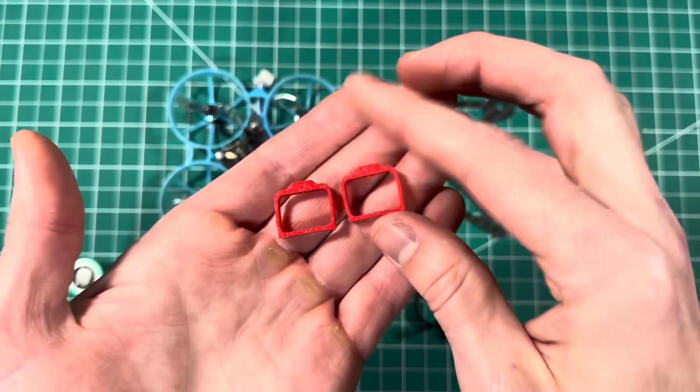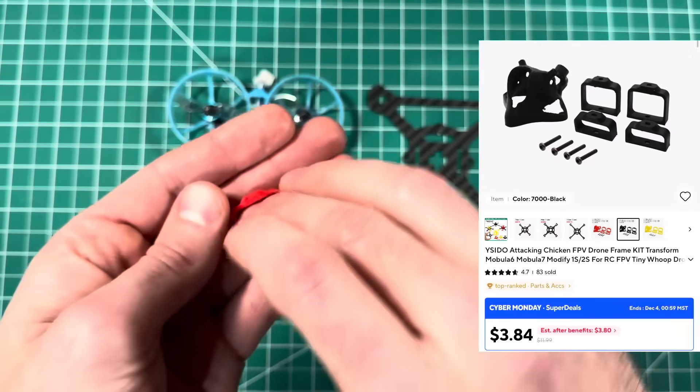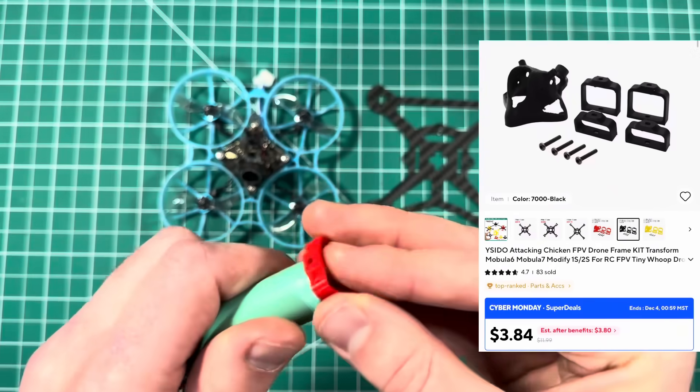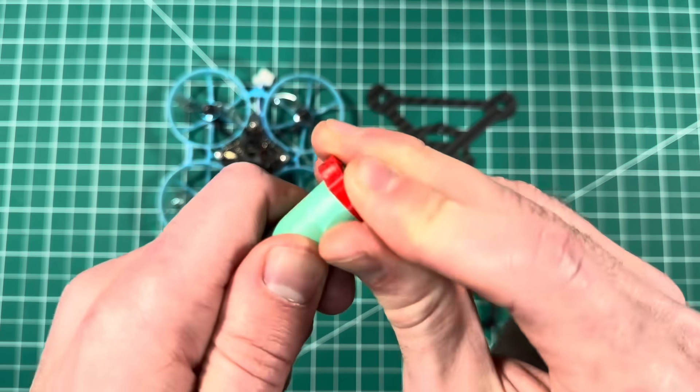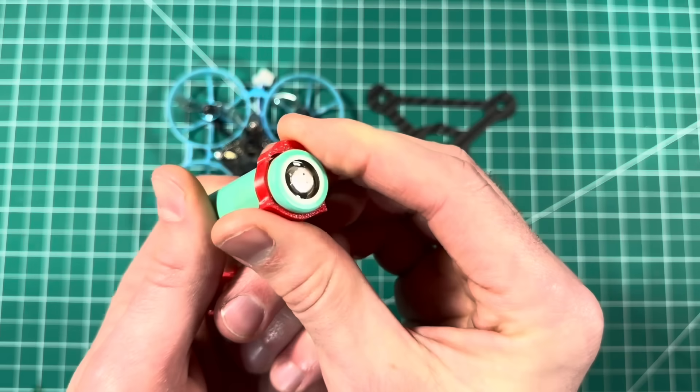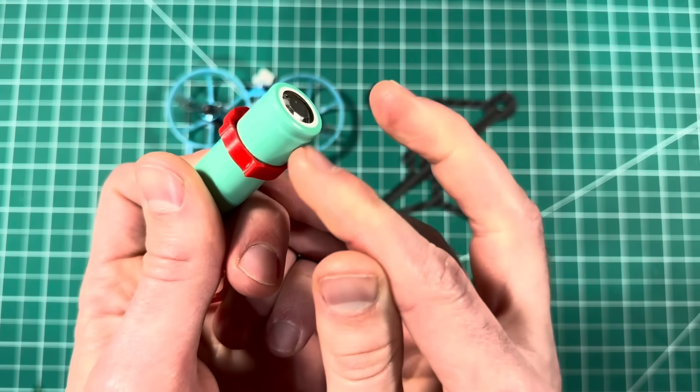on AliExpress, you can buy these 2S LiPo battery holders and it will squeeze an 18650 into it, but it is a little bit tight and it doesn't have that extra protection.